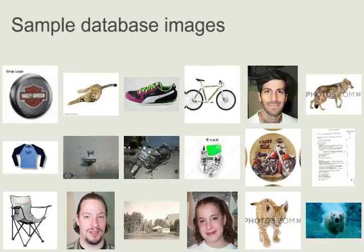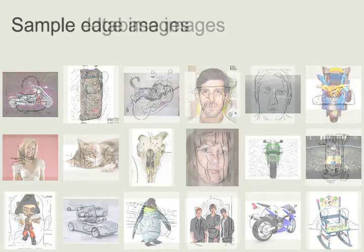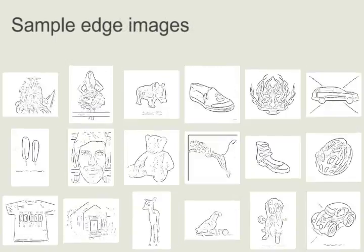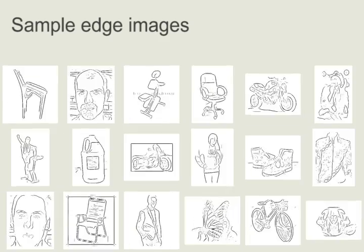Each image is first processed to create corresponding edge images. A database is created by further coding the edges, indexing them, and using a hashing technique for fast look up.